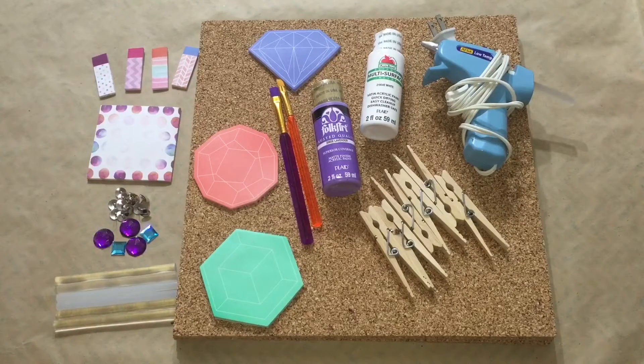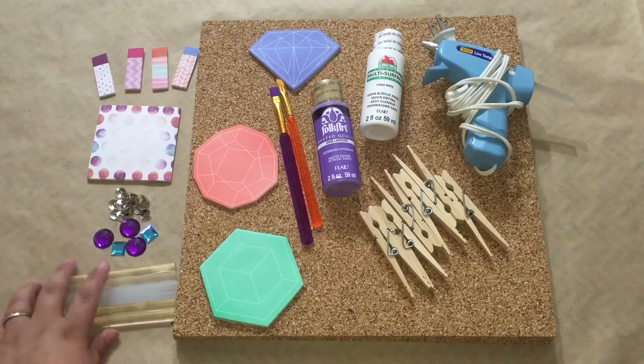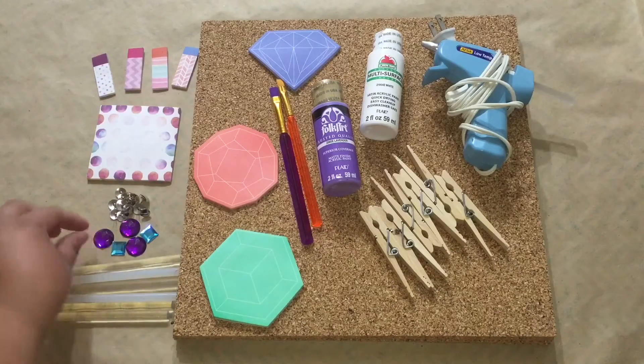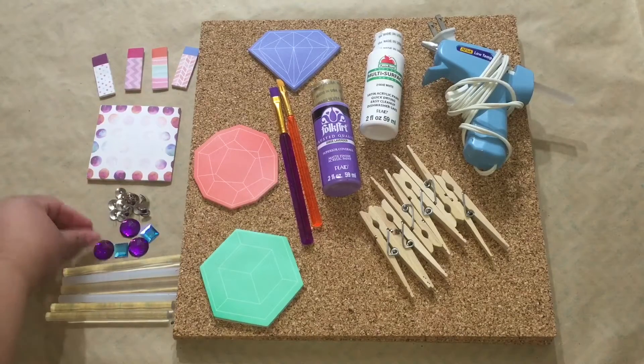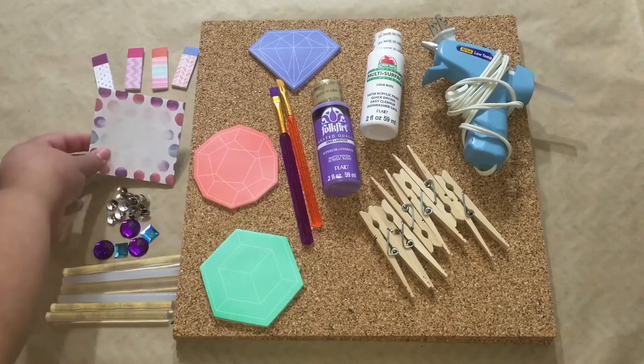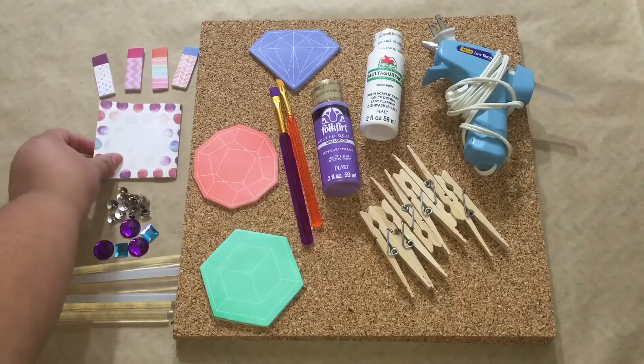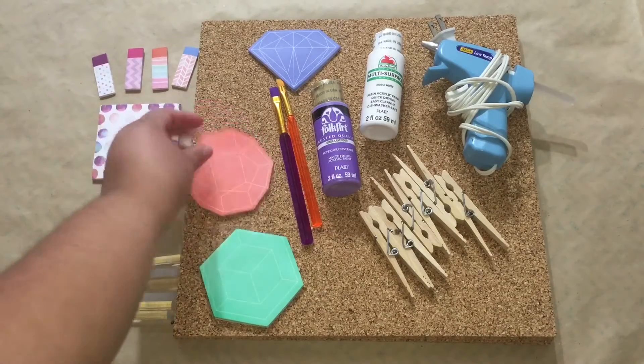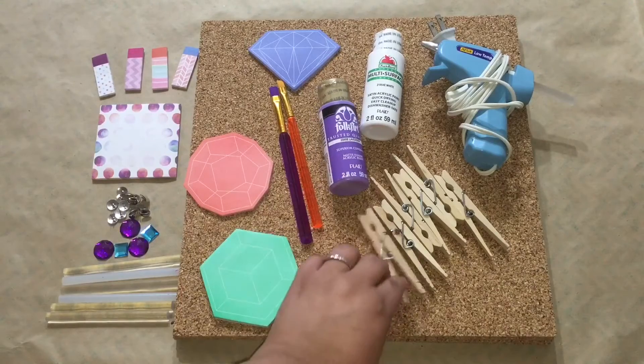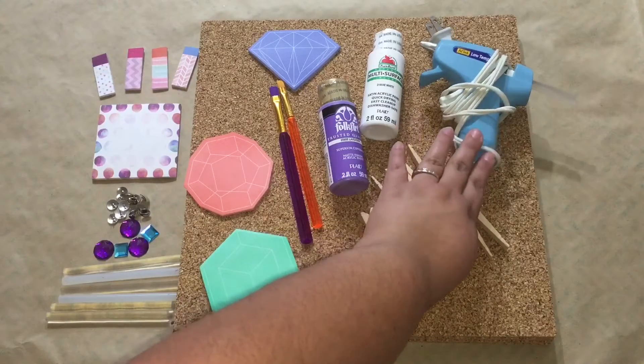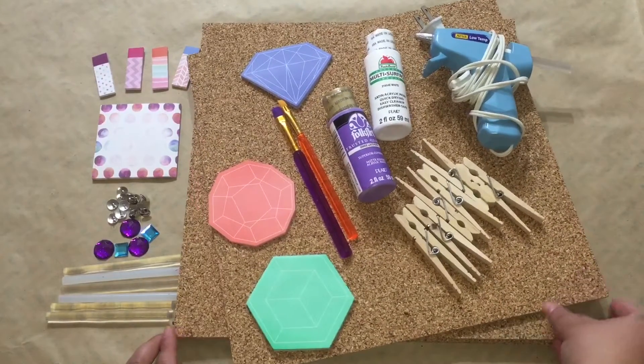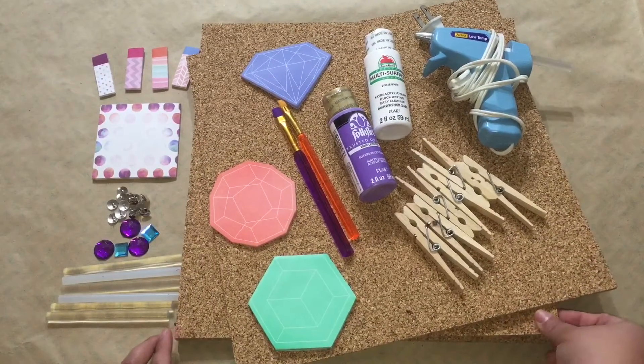The supplies that you are going to need are glue sticks, some gems in different colors, thumbtacks, notepads - I did find a couple of different cute ones that I liked - paintbrushes, acrylic paint, clothespins, a glue gun, and also a 12 by 12 corkboard. I found mine in a four-pack but you're only going to need one for this project.